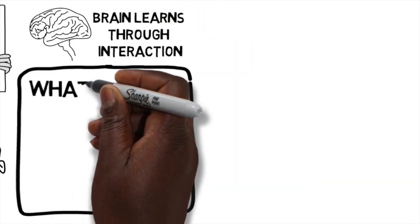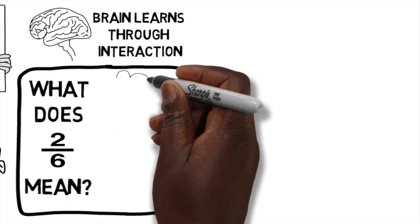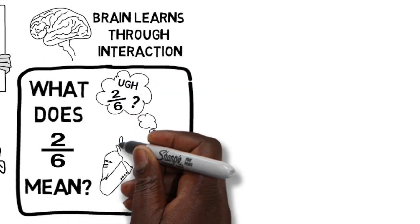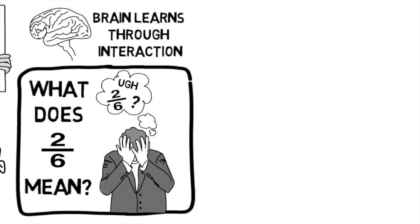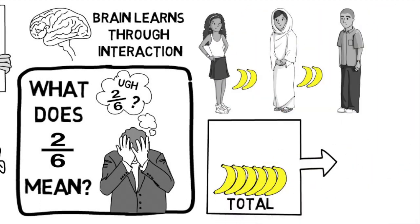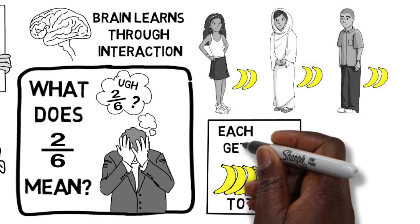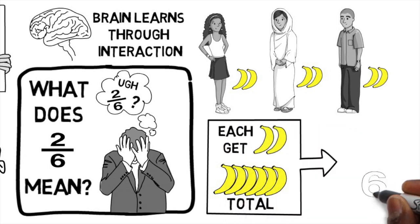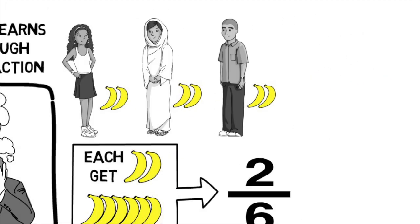For instance, if I asked you, what does the fraction 2 over 6 mean? The idea of the equation can be daunting within itself, and we haven't even begun solving the problem yet. How about if I showed you three children who divided six bananas equally amongst themselves, so they each get two bananas? You are now more likely to understand the concept because it relates to your everyday life.